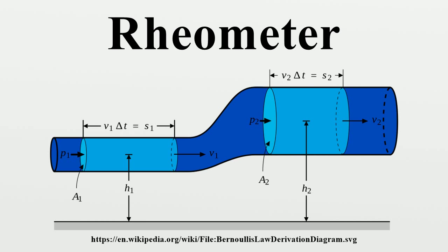Sentmanat: The Sentmanat extensional rheometer is actually a fixture that can be field-installed on shear rheometers. A film of polymer is wound on two rotating drums, which apply constant or variable strain rate extensional deformation on the polymer film.